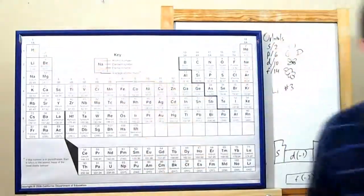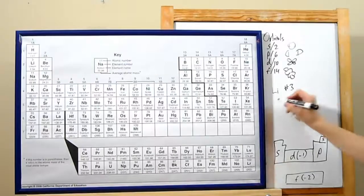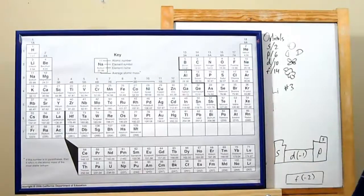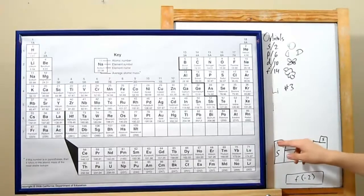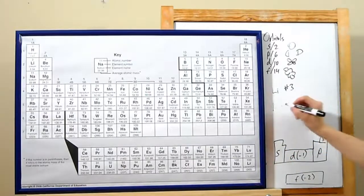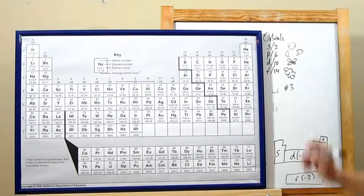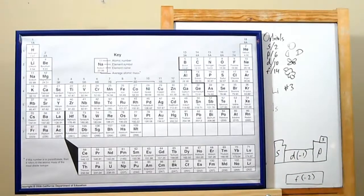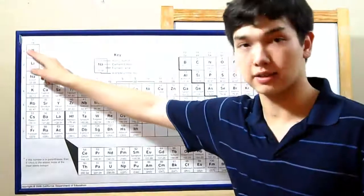When writing out an electron configuration, start out with hydrogen. The first thing you write is your period number, one. Then you write what orbital you're in, s, p, d, or f. You check which block you're in. Hydrogen is in the s-block, so one s. And then add electrons up here in superscript, counting from left to right, until you get to your element.